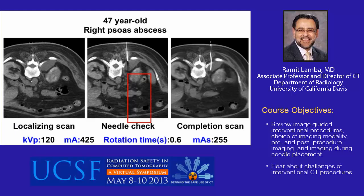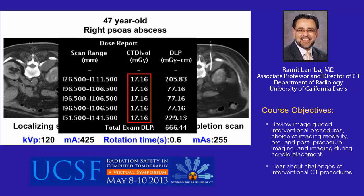In this example of a drain placed into a right psoas abscess, the procedure was done using the default scanner protocols. No attention was paid to dose reduction for the localizing scan, needle placement, or post-procedure scan. All images were acquired at the same dose at a reasonably high mAs, and the total DLP for this procedure translates to an effective dose of 10 mSv, delivered over a very small anatomic territory.